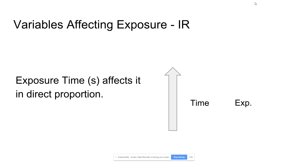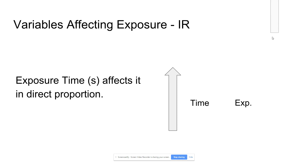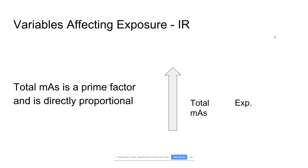When milliamperage increases, the filament burns hotter — not longer, because that's time — and thermionically produces more electrons, which ultimately turn into more photons. More photons equals more exposure. If time increases, the same thing happens: the filament is at a certain temperature, but now you keep it on longer, continually increasing thermionic emission, leading to higher exposure to the patient and image receptor.